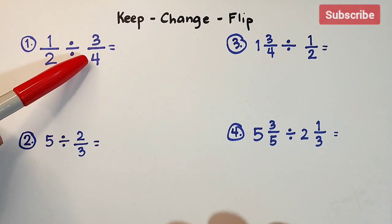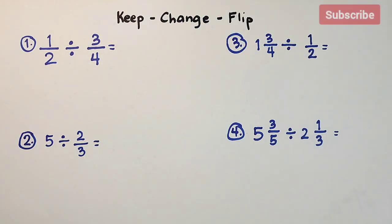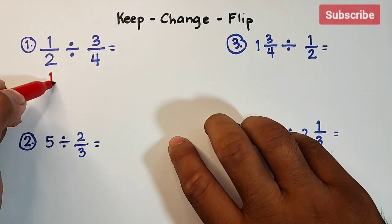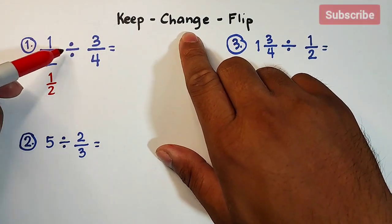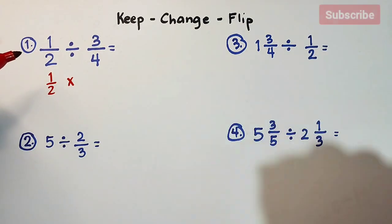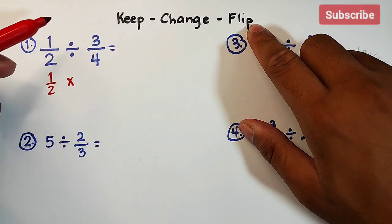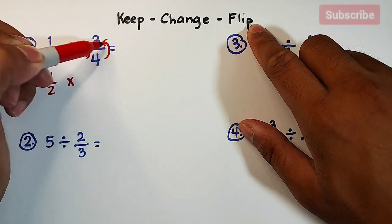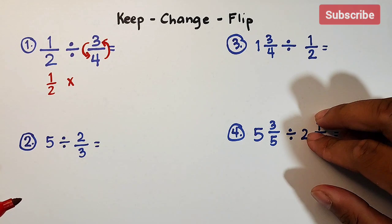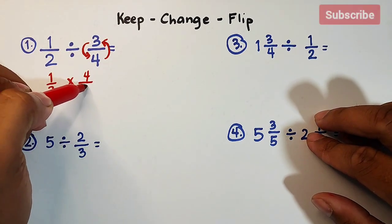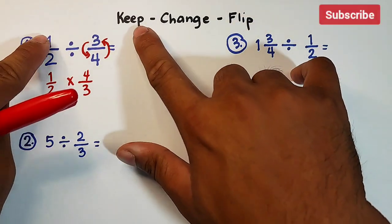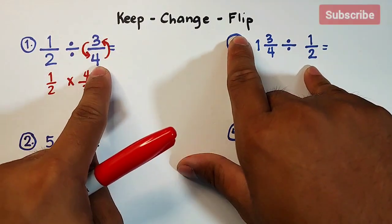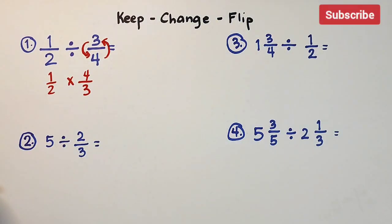Let's start with number one: one-half divided by three over four. How do we use keep, change, and flip? For 'keep,' you copy your first fraction — one-half. For 'change,' you change the division to multiplication. For 'flip,' you get the reciprocal of your second fraction — you interchange the position of your numerator and denominator, and it becomes four over three.